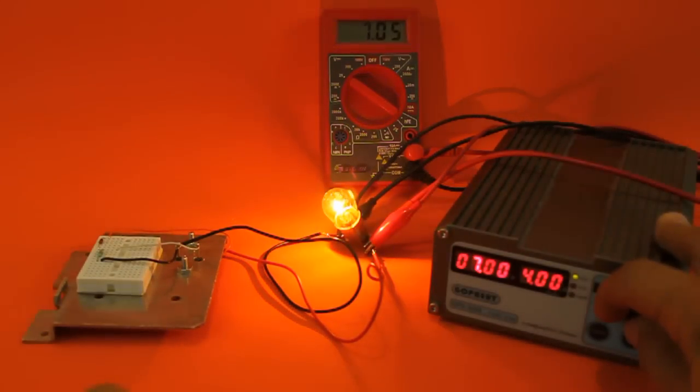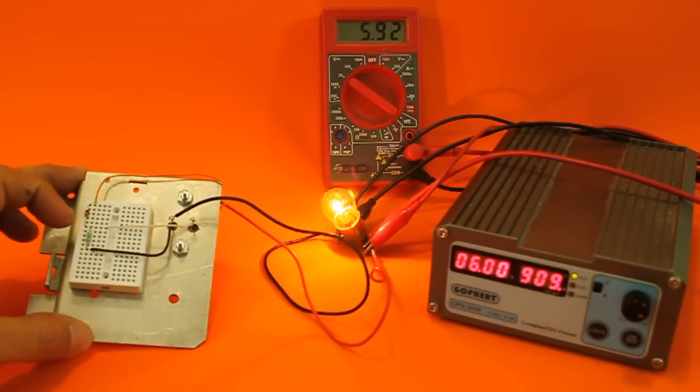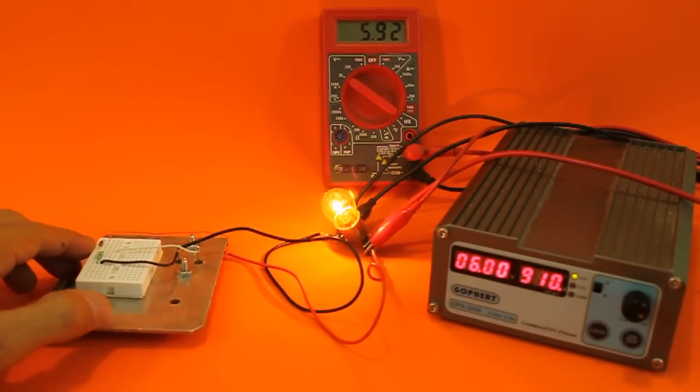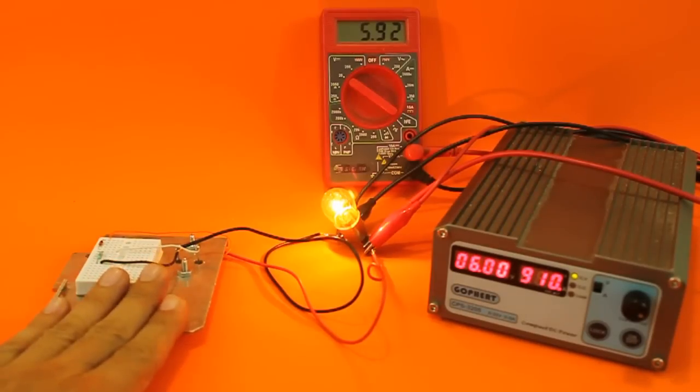So in this way, we can use a Zener diode of very low power to control a large load using a power transistor.